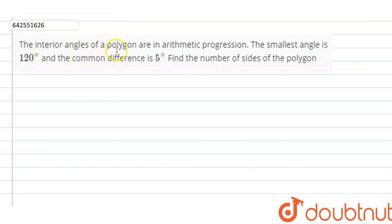The interior angles of a polygon are in arithmetic progression. The smallest angle is 120 degrees and the common difference is 5 degrees. Find the number of sides of the polygon.